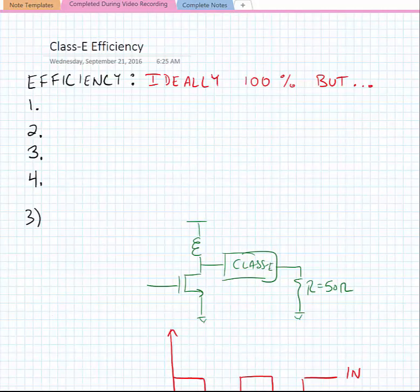Now, we've noted that the efficiency of a class E power amplifier should ideally be 100% if we can perfectly shape the network so that the drain voltage and current don't overlap, and assuming that we had lossless passives so that we didn't have any loss in our matching network. But we did also note that there are some non-idealities even beyond that.